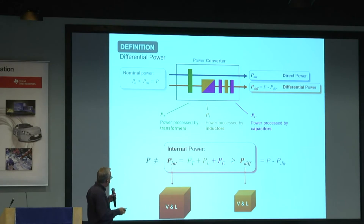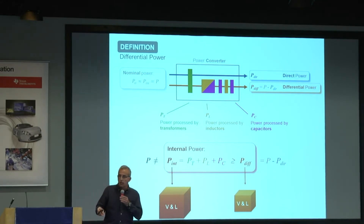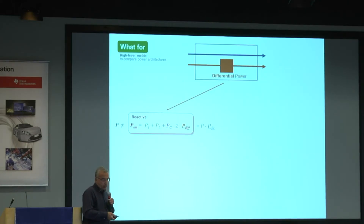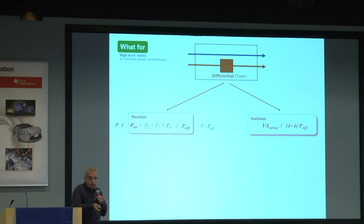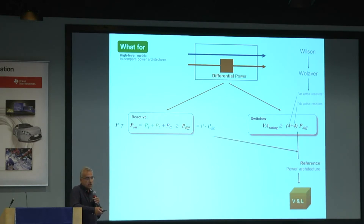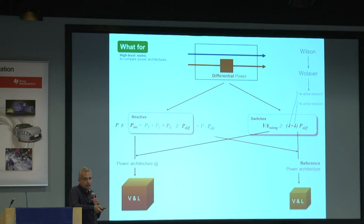Once you have that, you would expect that the converter processing less power would be smaller than one processing more. Something you can do with the differential power is apply it to the reactive components and also calculate the limit of the VA rating of the devices. That limit can be found in the publications from 1966 and 1969. The question is: if you select a converter at the lower limit — both of VA rating and differential power — it should in principle be smaller. Any other case would have higher processing.